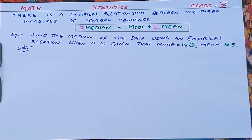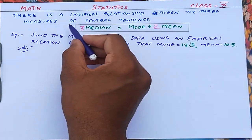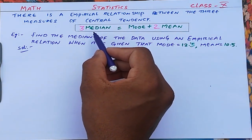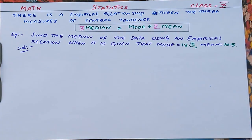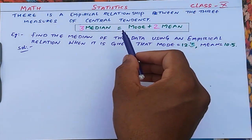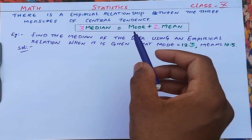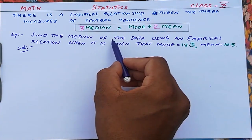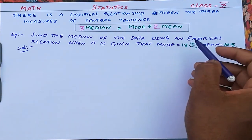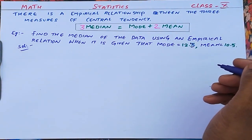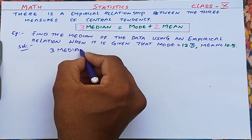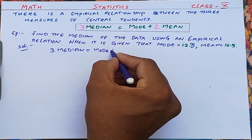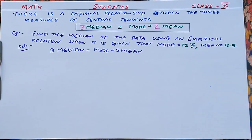The empirical relationship between the three measures of central tendency is: 3 × median = mode + 2 × mean. Using this relation, if any two values are given, we can find the third. Example: find the median when mode equals 12.3 and mean equals 10.5.